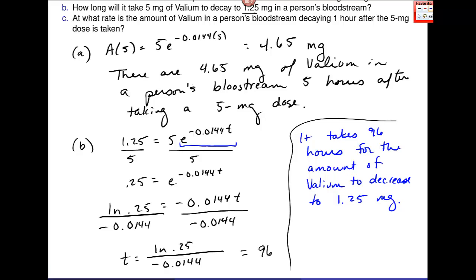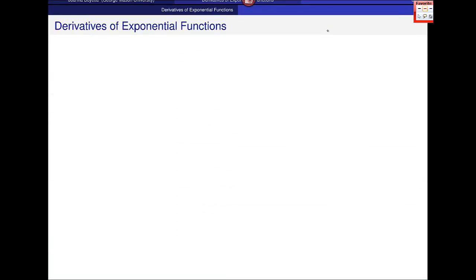Part C: at what rate is the amount of Valium decaying one hour after the dose is changing? Here we see this change in language. At what rate is the decay happening? This is definitely a decay model. That indicates I need to use the derivative. Let's take the derivative of this function, thinking about it after one hour. A(t) = 5e^(-0.0144t). I want to find A prime of t at t = 1.